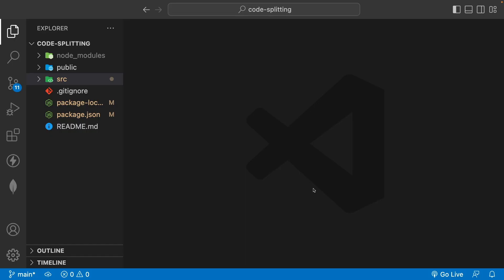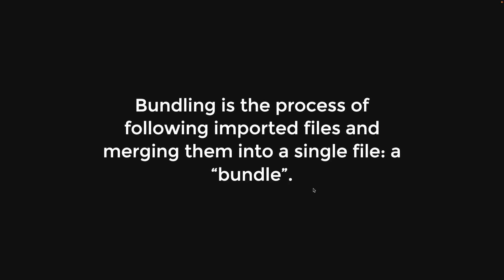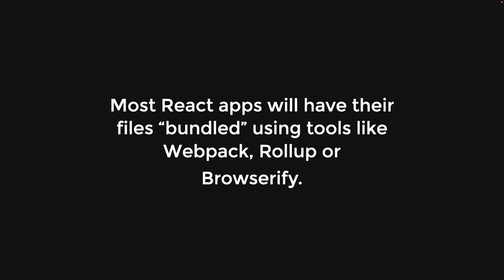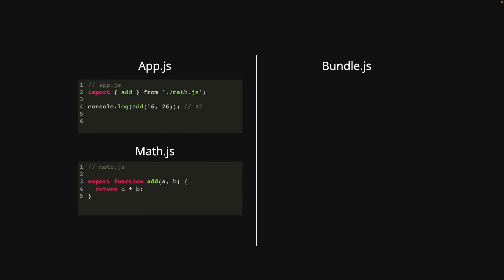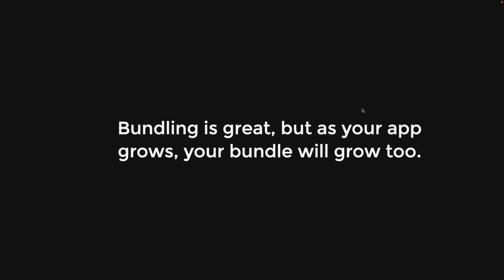Before we jump into the code example, let's understand the basics of bundling and code splitting. Bundling is a process of following imported files and merging them into a single file — we call it a bundle. Most React apps have their files bundled using tools like Webpack, Rollup, or Browserify. For example, we have an app.js with an import statement importing a named export called 'add' from math.js, and the resulting bundle merges both files together.